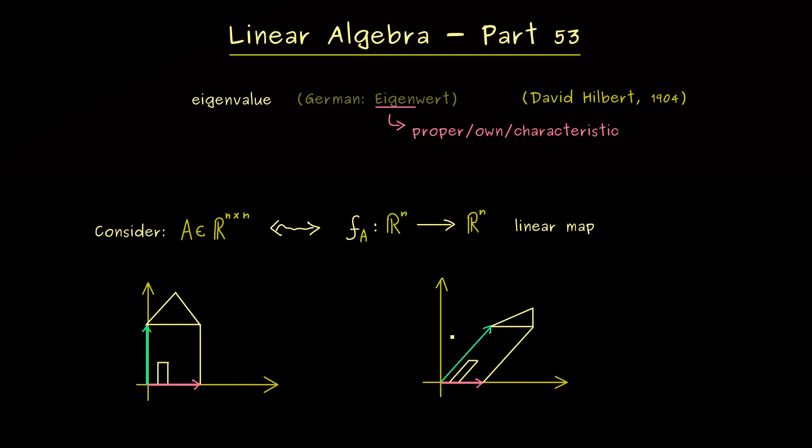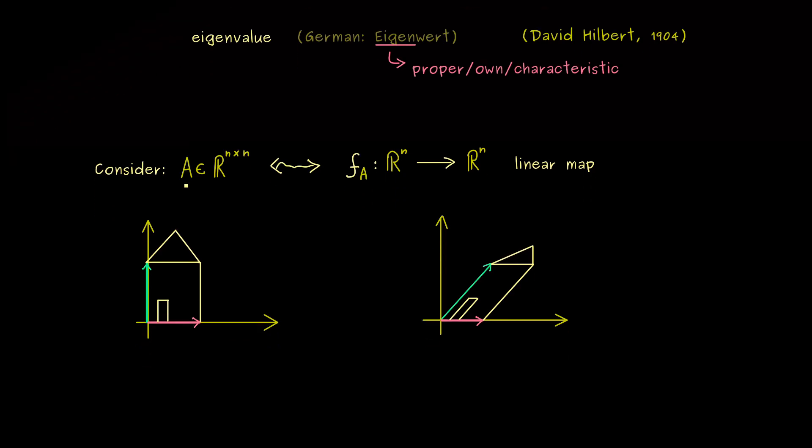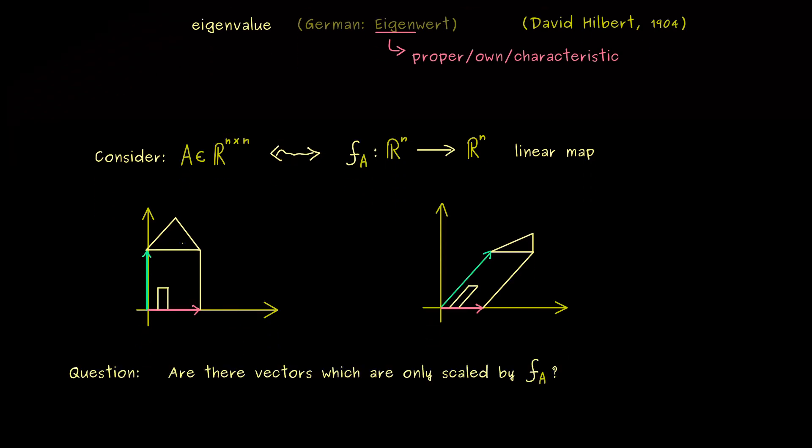And we see, a lot of points from the house are shifted and moved. However, we also recognize that this one direction here is not rotated in any way, it's just scaled a little bit. And in fact, this is exactly the question we ask when we deal with eigenvalues and eigenvectors. More precisely, we ask, are there any vectors that are only scaled by our linear map f_A?